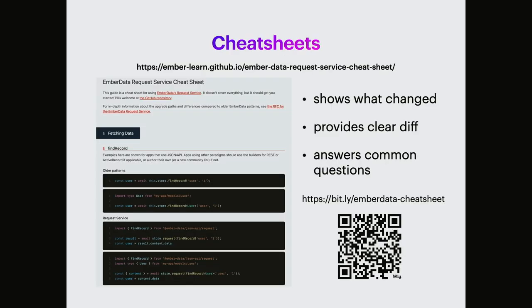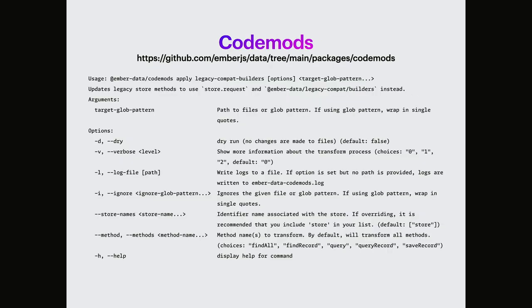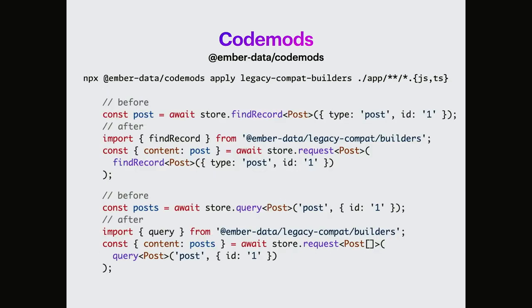Cheat sheets and code mods. Just like for Octane, we prepared a cheat sheets project website that will show you exactly what has changed. It will provide you clear GIFs, and I hope it will answer the common questions. It's not fully merged yet, but it will be available there — there's a link to the repository. Kristen worked really hard to make code mods a thing, and we now have code mods under the Ember data repository. It's been tested on the audit board and Kristen said there were no problems, so I feel safe to recommend you use it. The main thing covered by the code mods is how to migrate from the old style of using on-store methods to using requests.